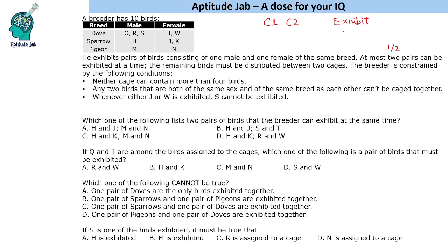The breeder is constrained by the following conditions. Neither cage can contain more than four birds. So if he exhibits one pair, he'll have four and four birds in the cages, and if he exhibits two pairs, he can have a two-four or a three-three setup. Also, any two birds that are both of the same sex and of the same breed cannot be caged together.